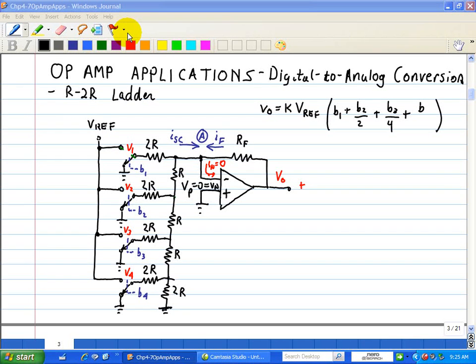The previous video talked about a binary-weighted summer digital-to-analog converter. Here, we're going to talk about an R-2R ladder digital-to-analog converter, or DAC. Obviously, the name here is because we only have two resistors at our input: 2R and R.